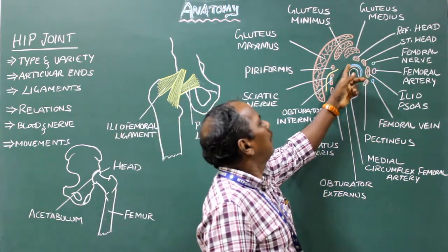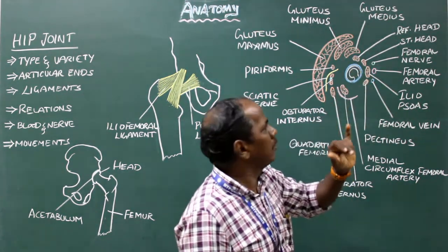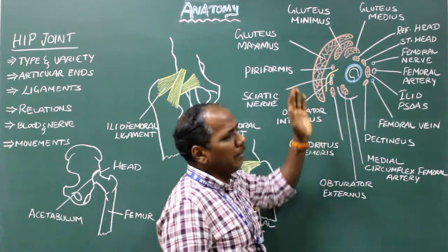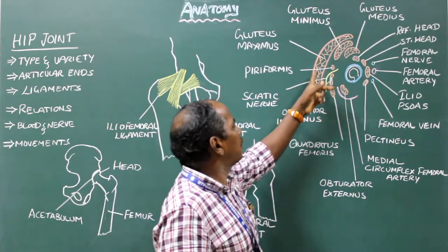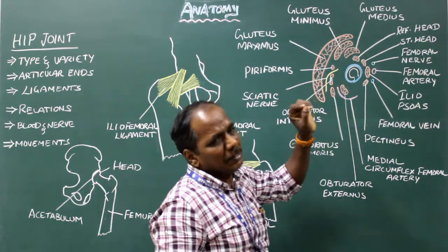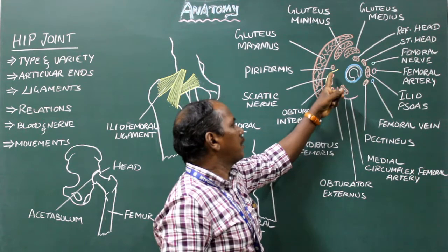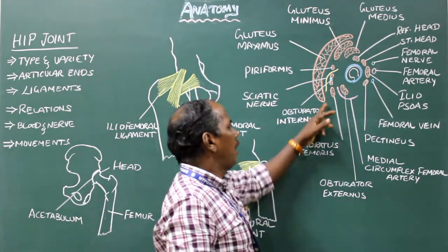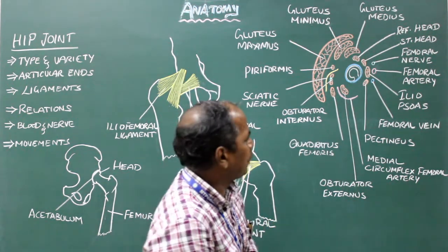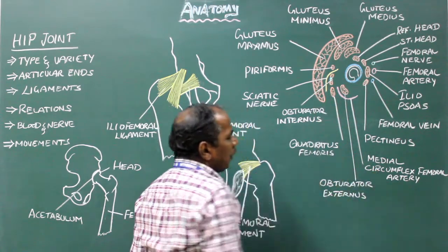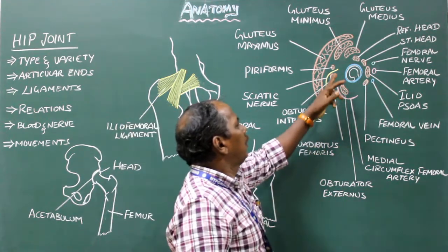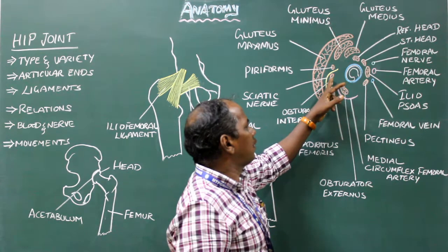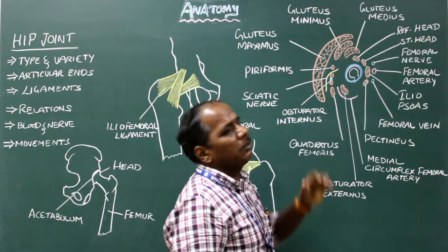Superiorly, the hip joint is related to the reflected head of rectus femoris, gluteus medius, and gluteus minimus. Posteriorly, it is related to gluteus maximus, piriformis, rectus femoris, obturator externus — which is separated from quadratus femoris by the medial circumflex femoral artery. The sciatic nerve is separated from the hip joint by the superior gemellus, tendon of obturator internus, inferior gemellus, and quadratus femoris.